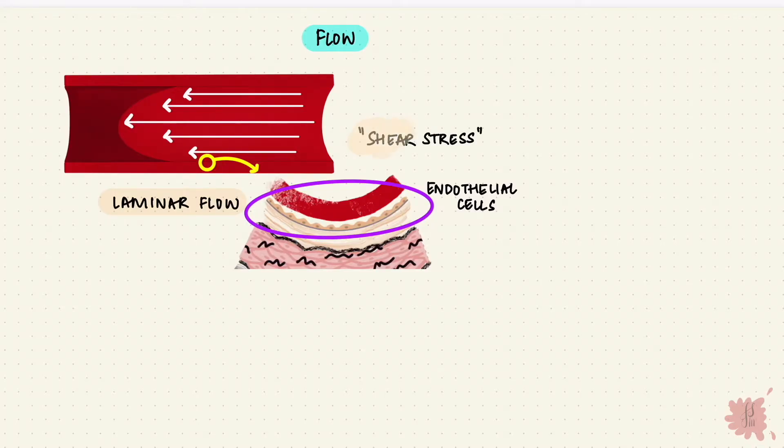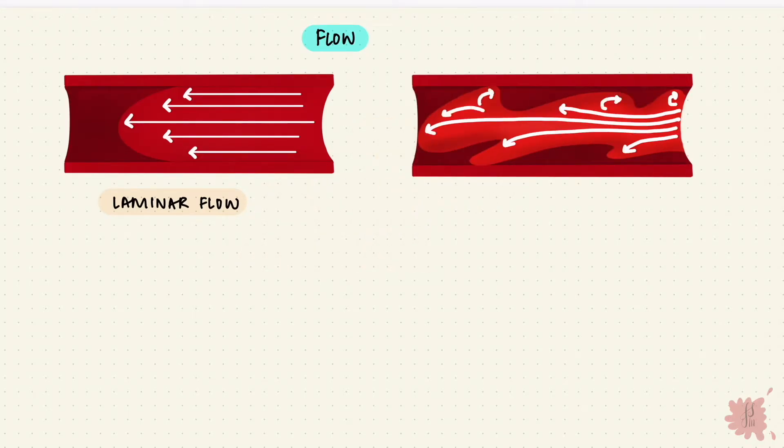Now sometimes this orderly flow can get messed up, and they start moving in different directions. That is called turbulent flow. Laminar flow is quiet, but turbulent flow is noisy.